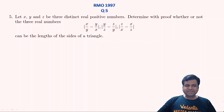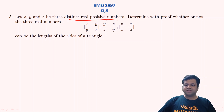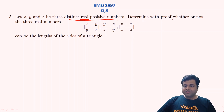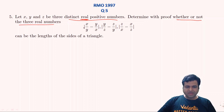The question states that if x, y, and z are three distinct real positive numbers — they are not necessarily natural numbers, they can be any real positive numbers — we need to determine with proof whether or not these three real numbers can be the lengths of the sides of a triangle.